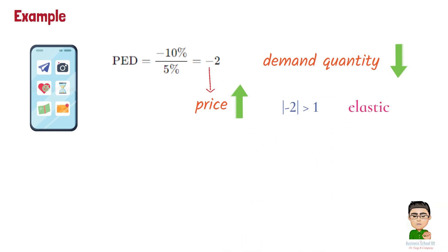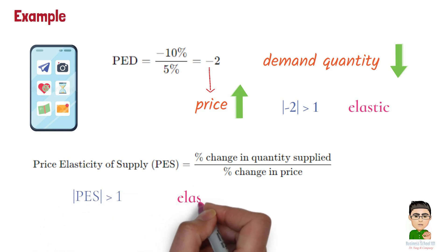Just like with demand, the formula for calculating the price elasticity of supply, PES, is as below. If PES is greater than 1, supply is elastic. If it's less than 1, supply is inelastic.